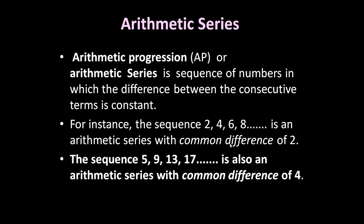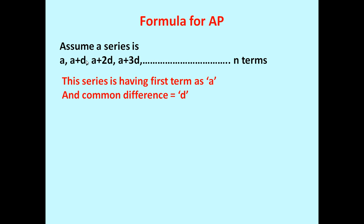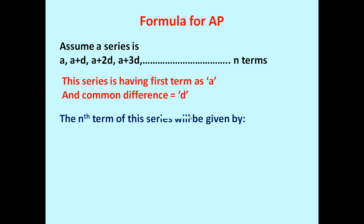Various formulas which we use for arithmetic progression: assume a series is a, a plus d, a plus 2d, a plus 3d, up to n terms. In this series, the first term is a and the common difference is d. Because a plus d minus a is d, and a plus 2d minus (a plus d) is again d. So the difference between any two consecutive numbers is d.